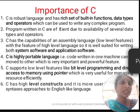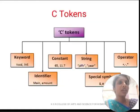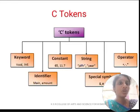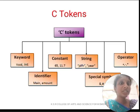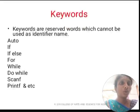C has high-level constructs and uses a syntax approach closer to the English language. Next, we are going to see about C tokens. C tokens are classified into six types: keyword, identifier, constant, strings, special symbols, and operators. A token is known as the smallest individual unit of a program.